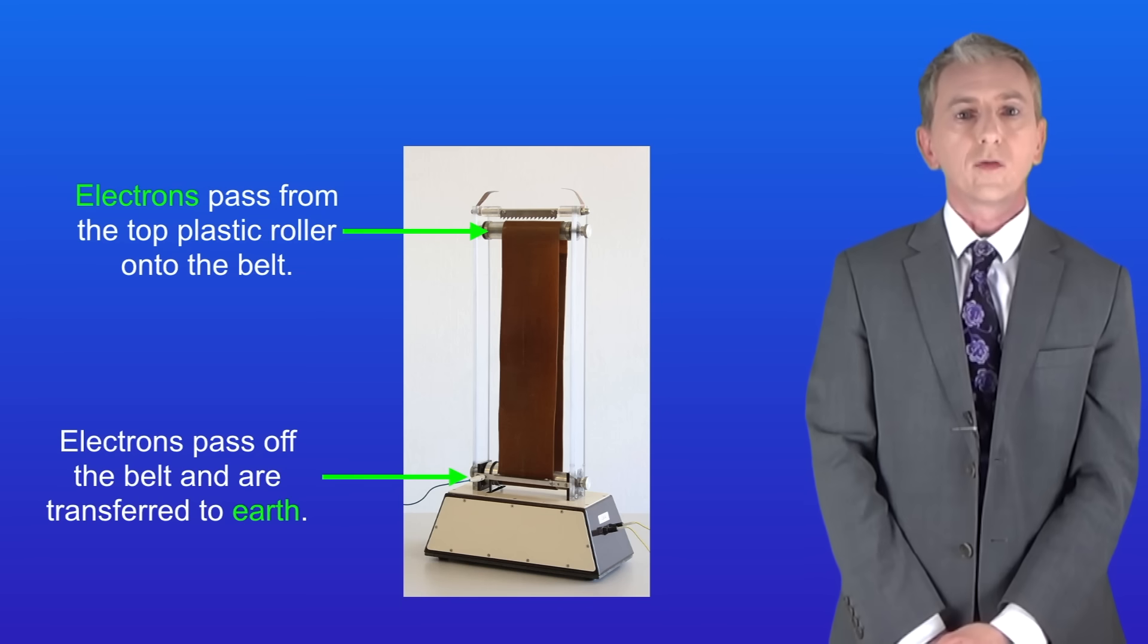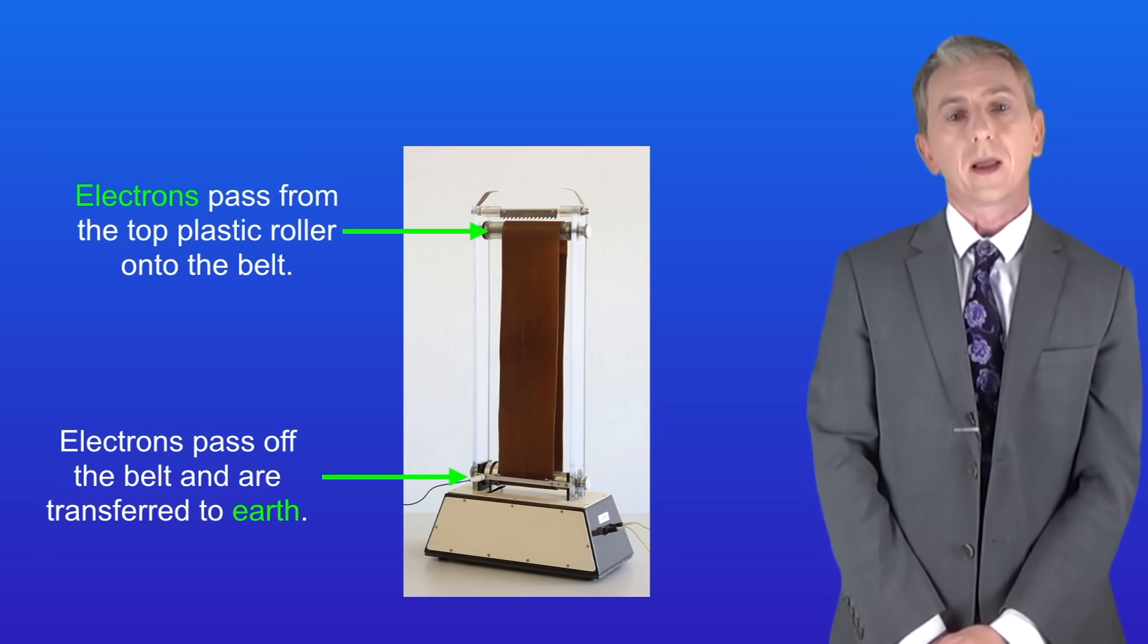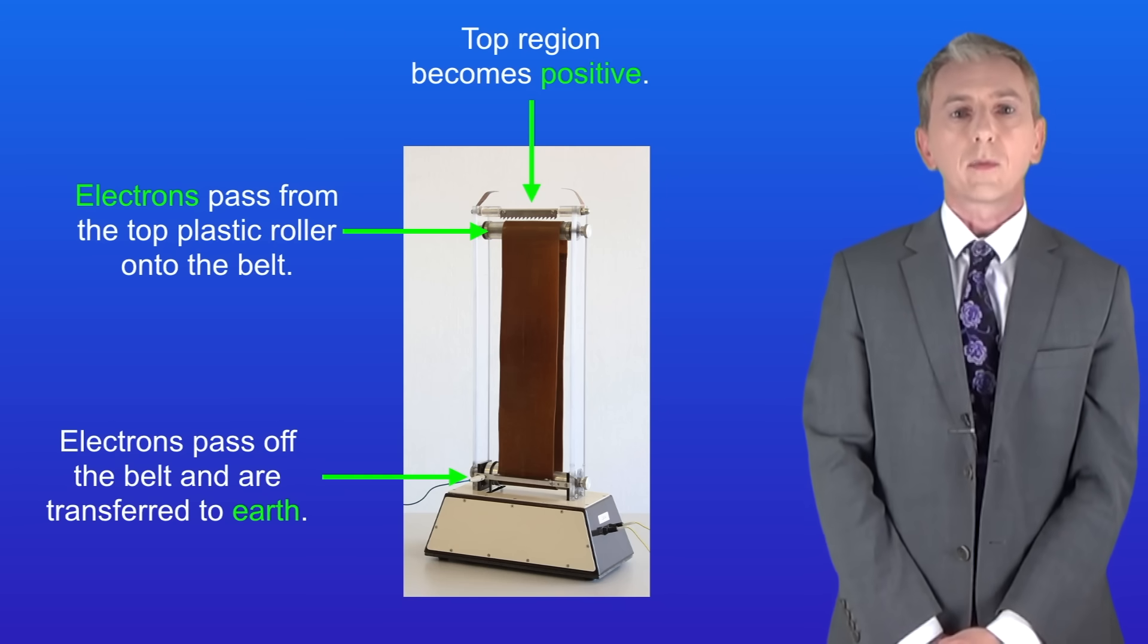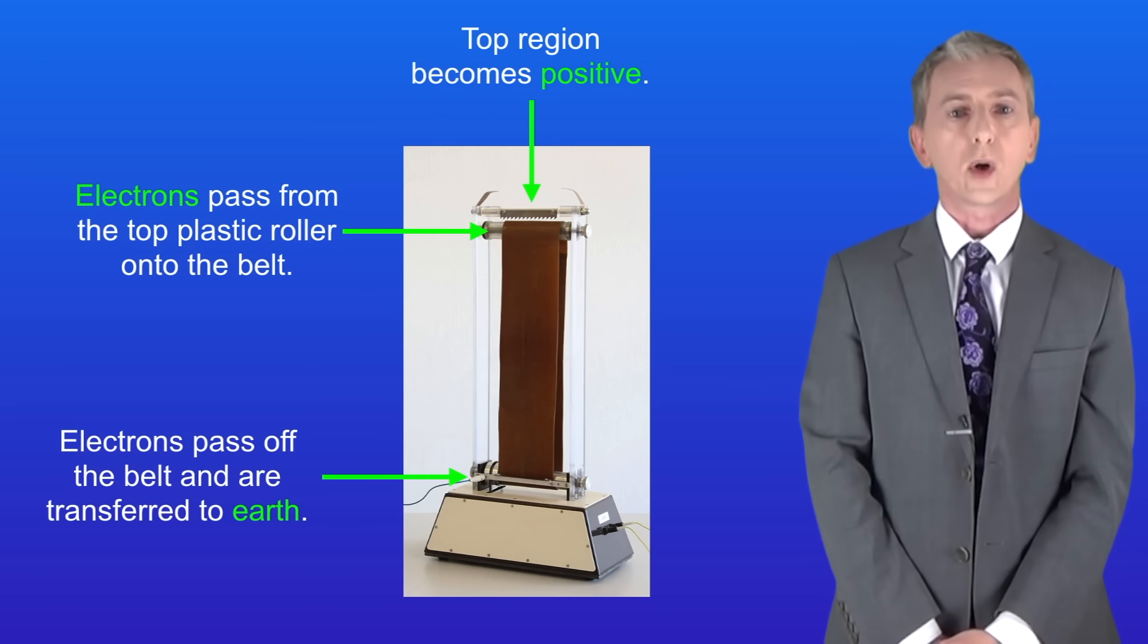Now as the belt moves over the bottom roller, electrons pass off the belt and they're transferred to earth. So over time the top region of the generator becomes positively charged.